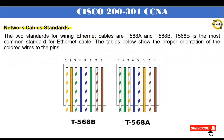Network cable standards. The two standards for wiring ethernet cables are T568A and T568B. T568B is the most common standard for ethernet cable. The T568B standard wire orientation is: 1. White-orange, 2. Orange, 3. White-green, 4. Blue, 5. White-blue, 6. Green, 7. White-brown, 8. Brown.